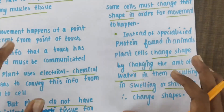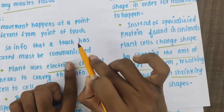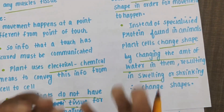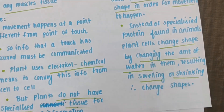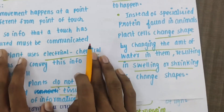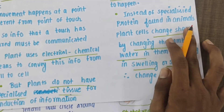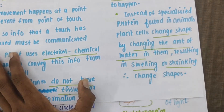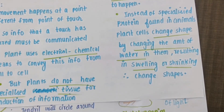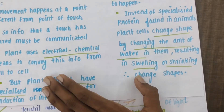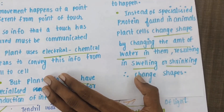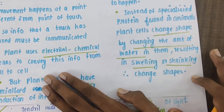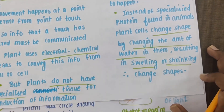When we touch the plant, it acts as a stimulant. In the areas where touch occurs, water moves in or out of the cells. This causes swelling and shrinking of the cells. So instead of specialised proteins as in animals — where muscles contract and cause movement — in plants, external stimuli cause the amount of water in the cells to vary, resulting in swelling or shrinking of cells, which causes the shape to change and the plant to move.